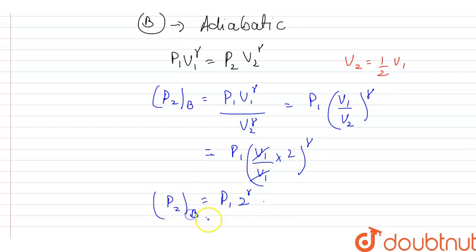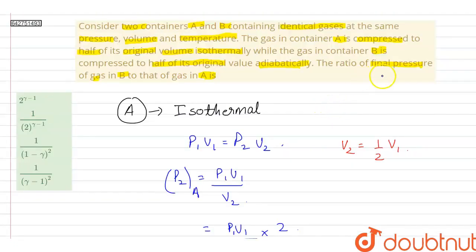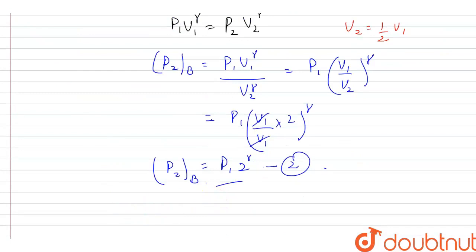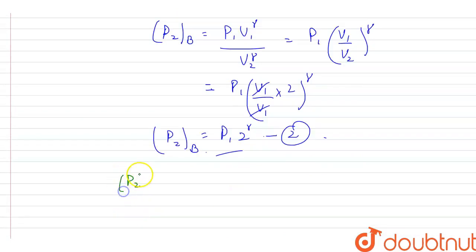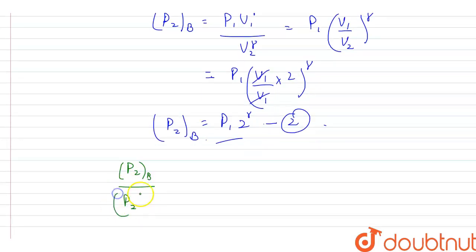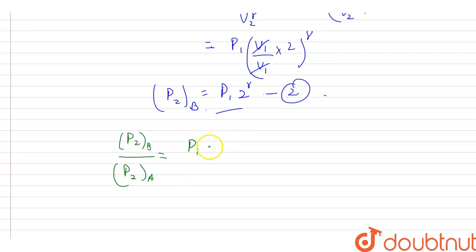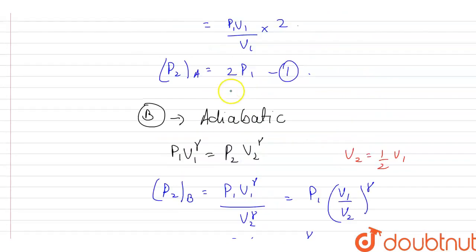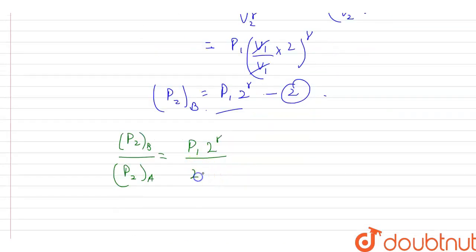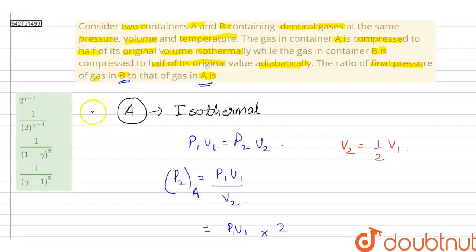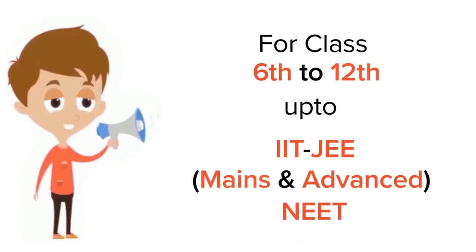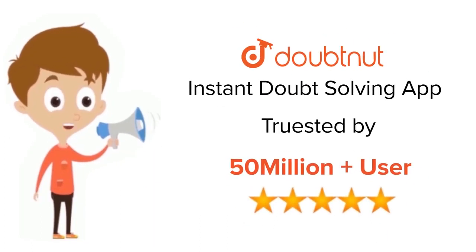Now we calculate the ratio of final pressure of gas B to that of gas A. From equations 1 and 2: P2B / P2A = P1·2^γ / 2P1 = 2^(γ-1). So the required ratio is 2^(γ-1), which means the correct option is option A. For class 6 to 12, IIT-JEE and NEET level — trusted by more than 5 crore students — download the Doubtnut app today.